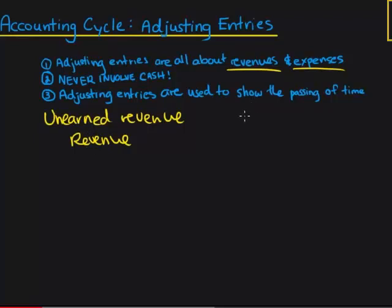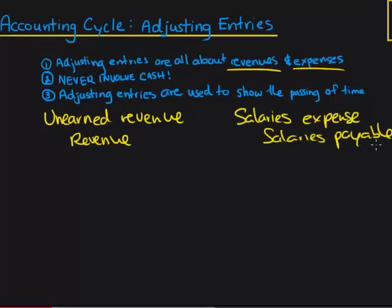We also have an expense adjusting entry, which might look something like this: salaries expense being debited and salaries payable being credited. There are many different types of expense adjusting entries, like interest expense and credit interest payable. One important thing to note is that when you have an adjusting entry, you'll never see revenues and expenses together. You'll never see debit salaries expense and credit revenue — you'll either see an expense adjusting entry or a revenue adjusting entry. They'll always be separate.